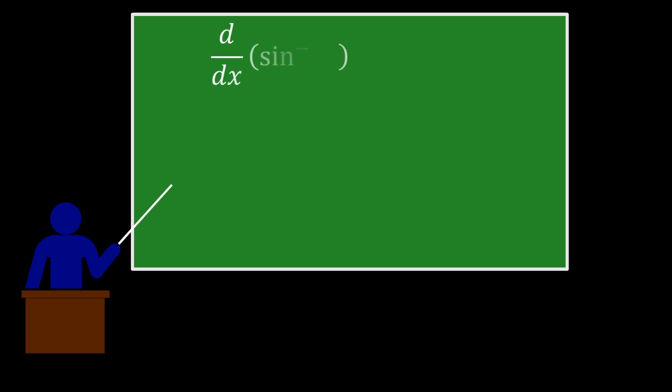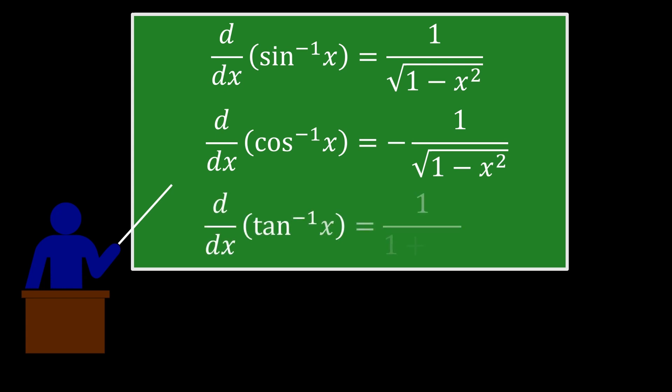First we have the derivative of sine inverse is 1 over square root 1 minus x squared. The derivative of cosine inverse is the negative of that. The derivative of tan inverse is 1 over 1 plus x squared.